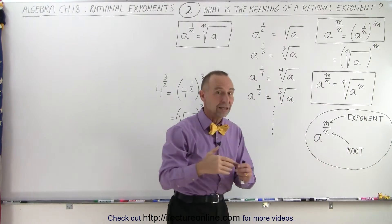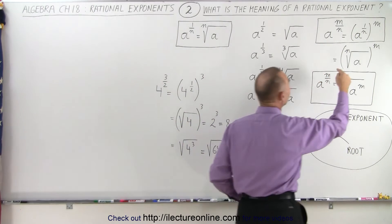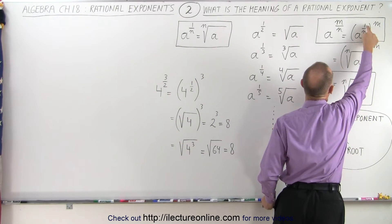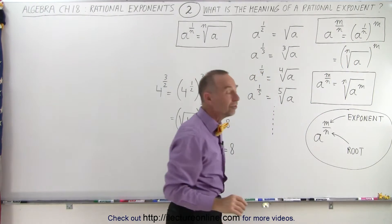Remember, when we have a number that has an exponent and it's raised to an exponent, we can then multiply the exponent. So m times 1 over n gives us m over n. So we can go this way or this way, and that's what that means.